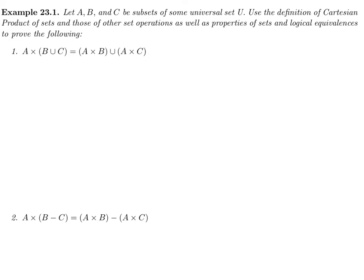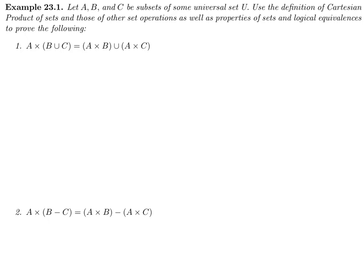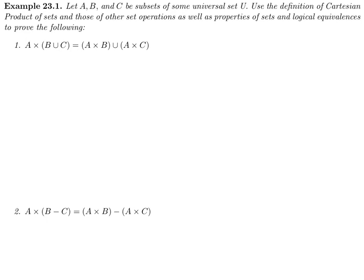In this video, I want to kind of put everything together that we've done, and so let's do some set equality proofs with some Cartesian products involved so we can see what's going on. So the first one is that A cross B union C equals A cross B union A cross C.